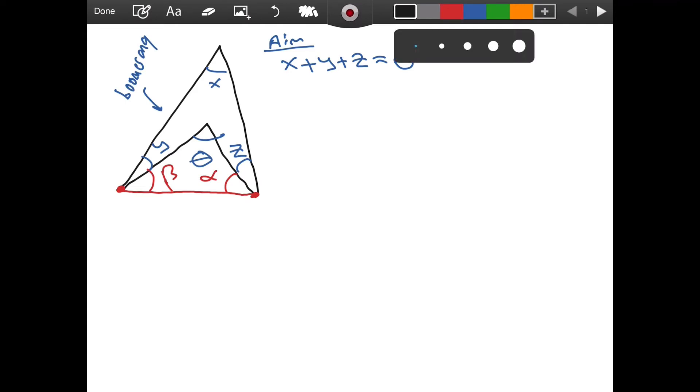Now what do we know? We know that since the sum of the interior angles of a triangle is equal to 180 degrees, we know that theta plus beta plus alpha is equal to 180 degrees. This is no surprise to anyone, I hope.